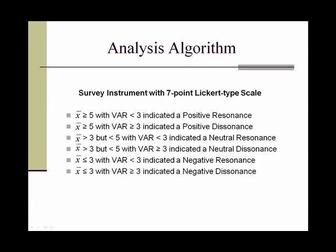The students viewed video clips and rated their opinions on a simple 7-point Likert-type measurement scale. The images and themes that scored high on the scale with a low level of variance indicated a positive resonance, and high levels of variance indicated a dissonant reaction to a clip.